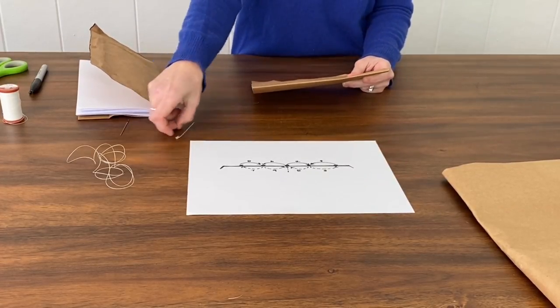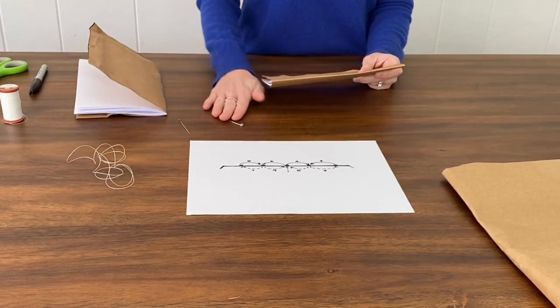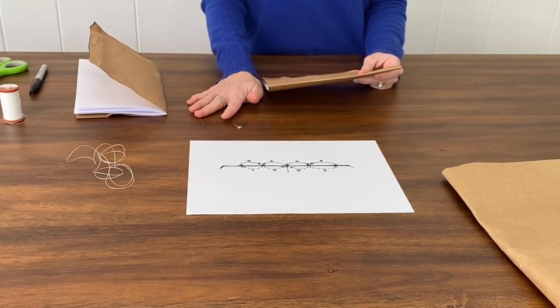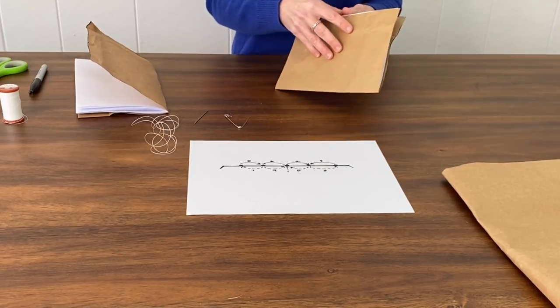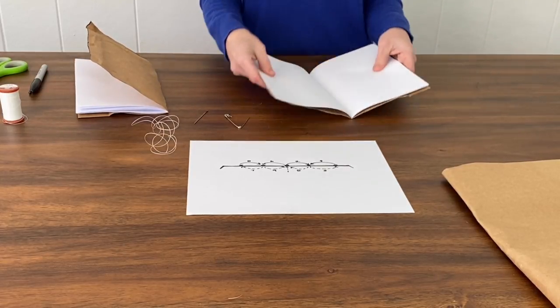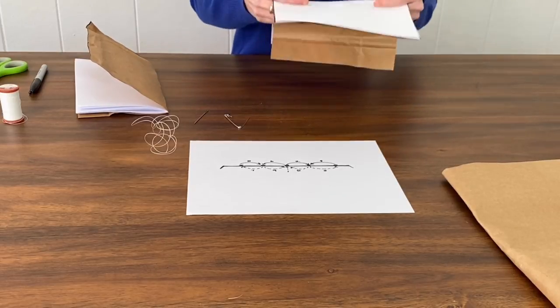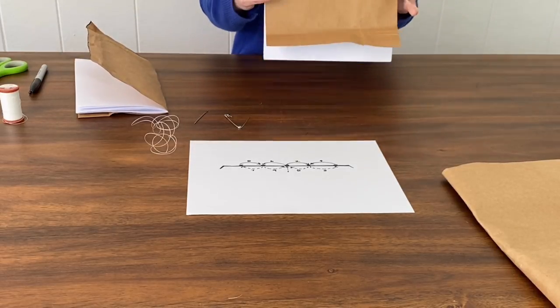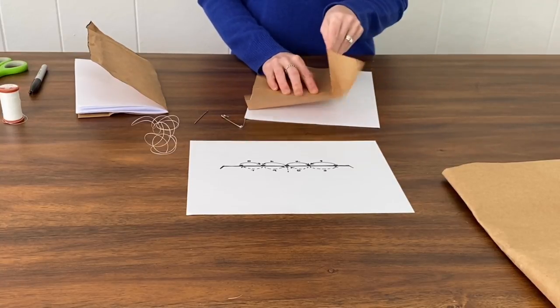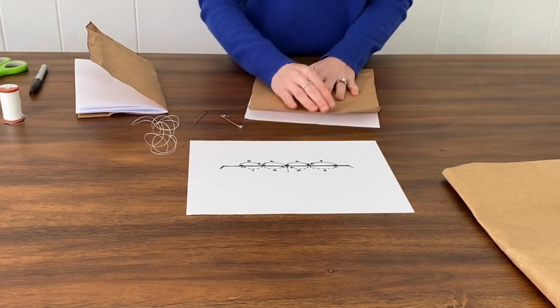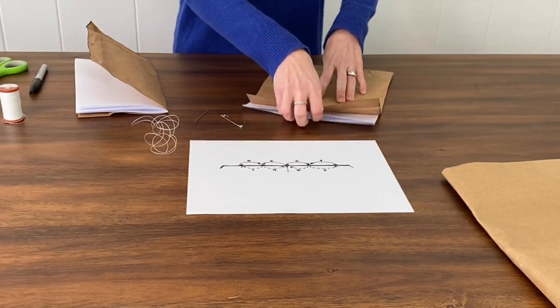You're going to need to poke holes along the spine or the folded edge of your journal. You can do that with the pen before you start the sewing process, or you can go straight to the needle and sew. I think it's a little bit easier to poke the holes with the pen, so I'm going to do it that way. I'm going to open up all the layers of my journal and make sure that the fold line is lined up when I poke my holes.